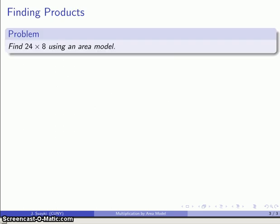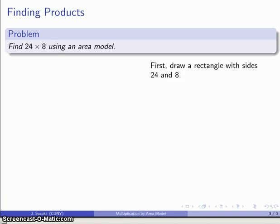So let's take a look at a problem. Find 24 times 8, and we'll use an area model for this. So our first step is we want to draw a rectangle with sides 24 and 8. So there's our rectangle. And if I can compute the area of this rectangle, then I also can find what the product is. Now the important thing here is we don't just find the area of this rectangle by multiplying 24 times 8, because that defeats the purpose of having an area model in the first place.